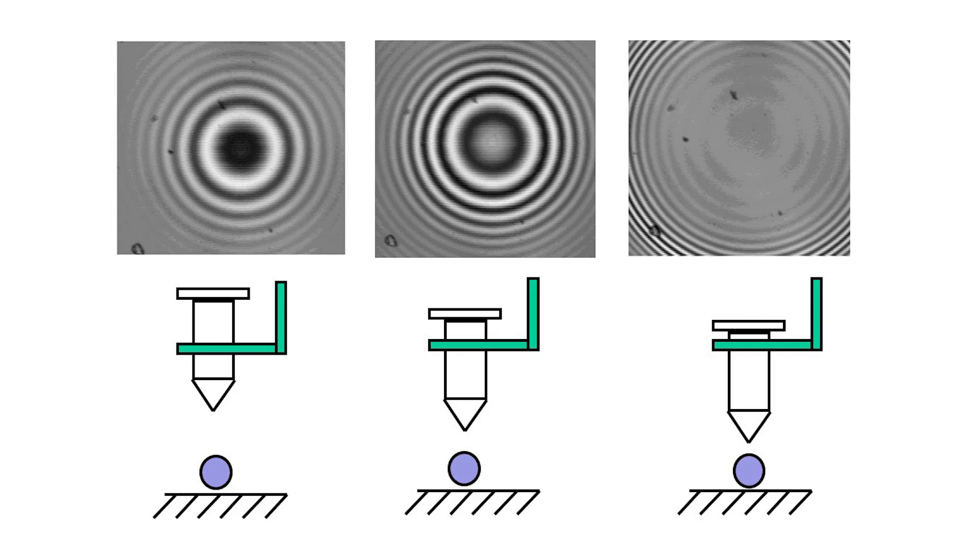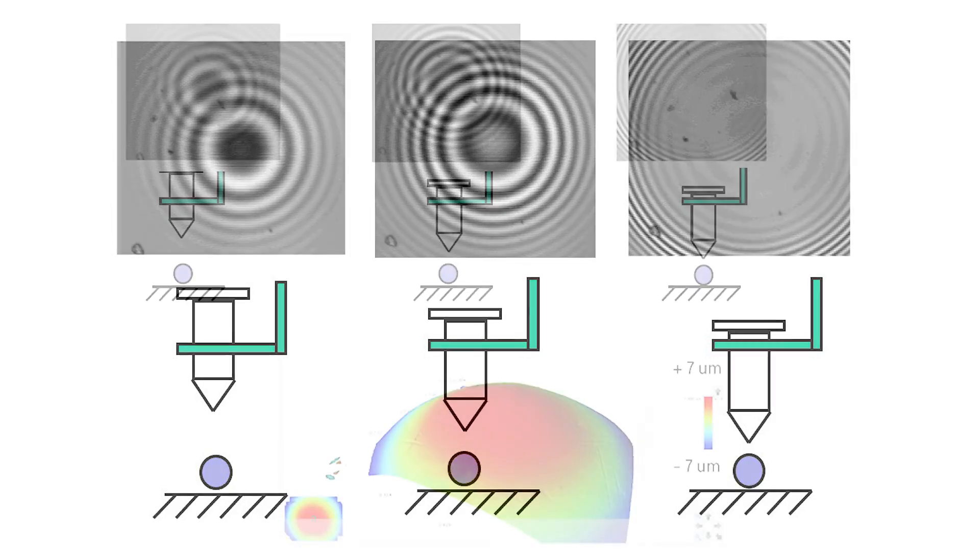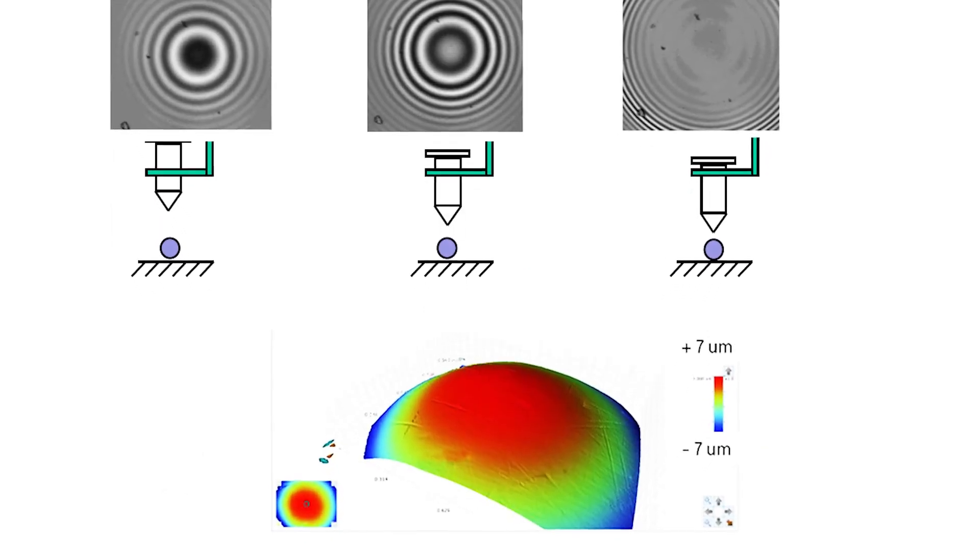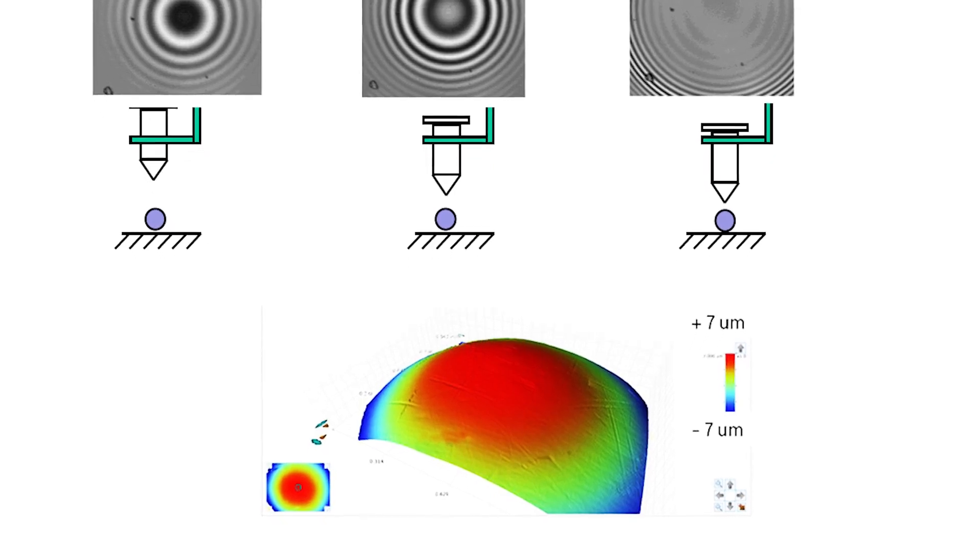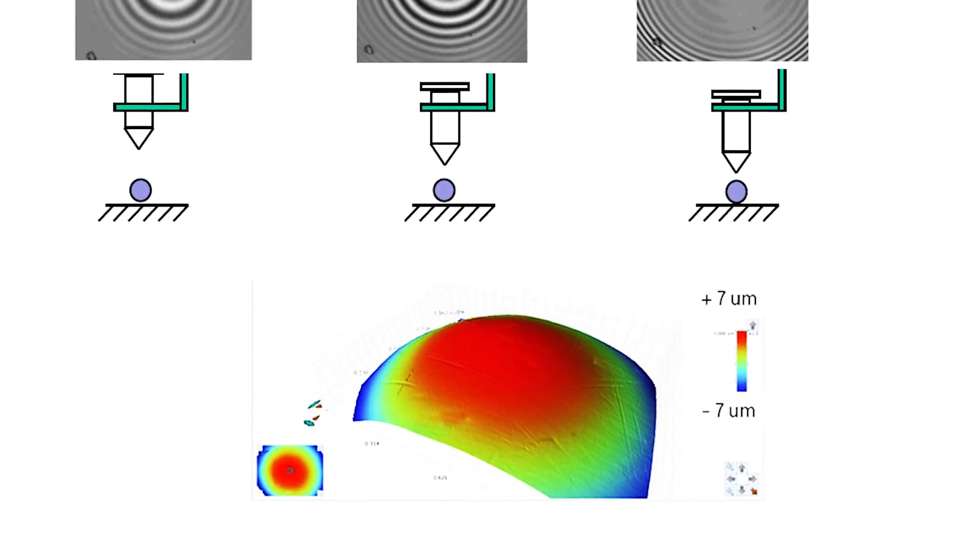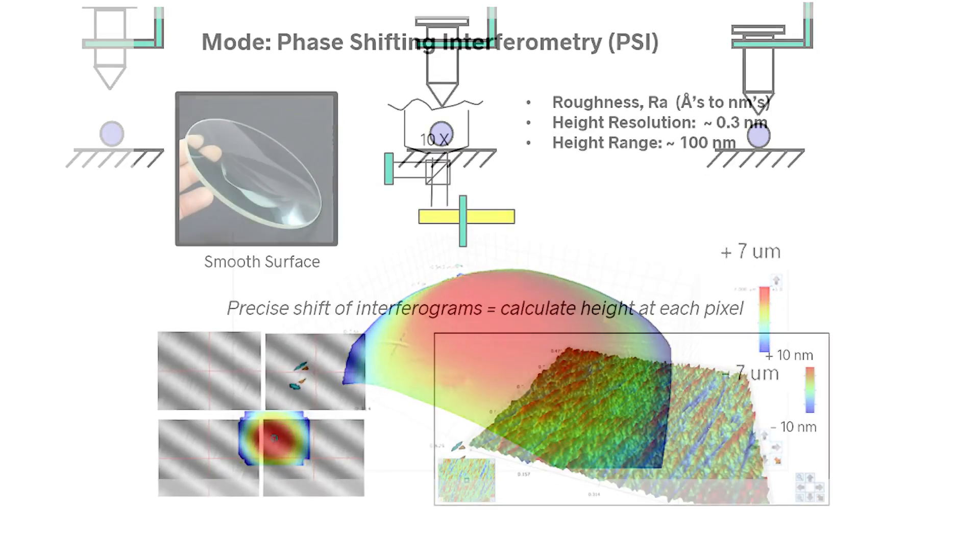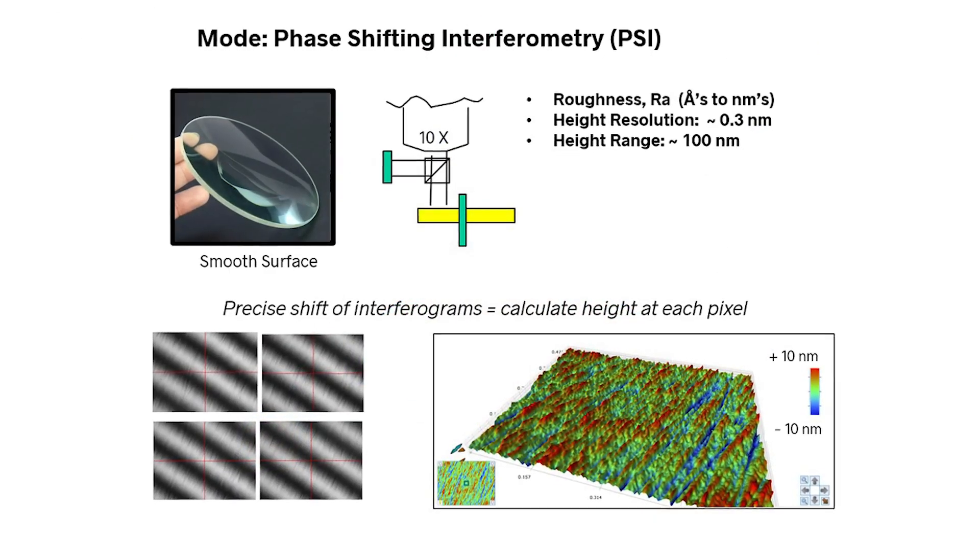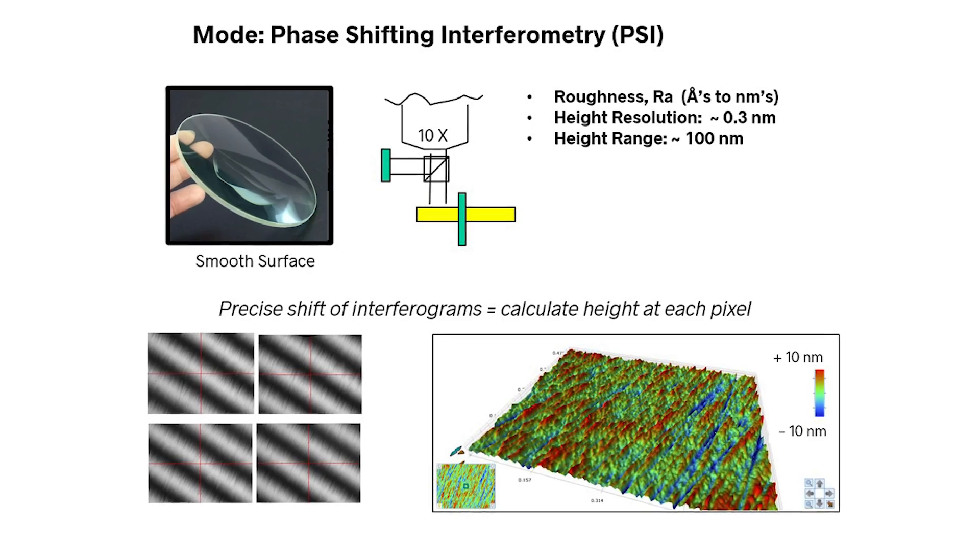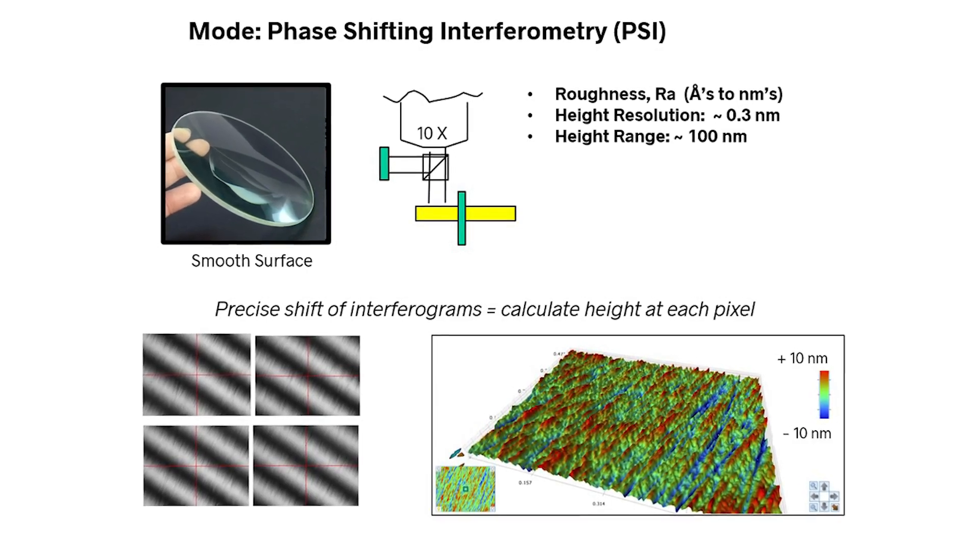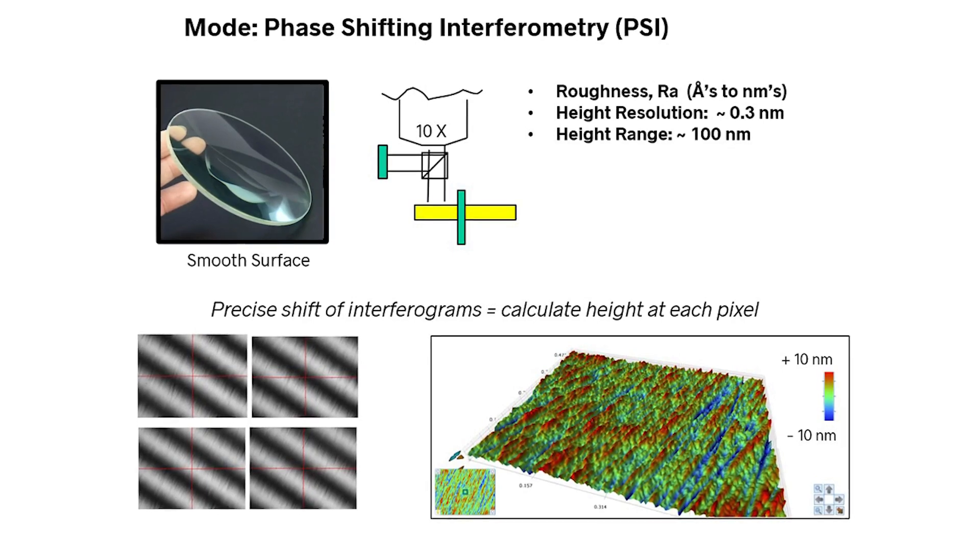We do a bunch of image processing and are able to figure out where the heights are at each point in that image within nanometer and even angstrom precision or resolution. Besides vertical scanning interferometry, it has phase shifting interferometry which allows us to measure optical components, super polished things with literally nanometer average roughness.